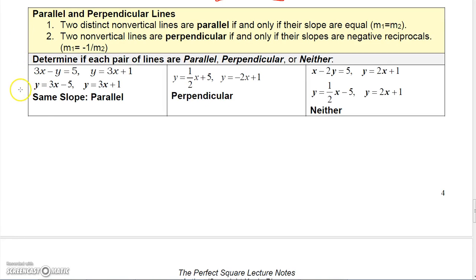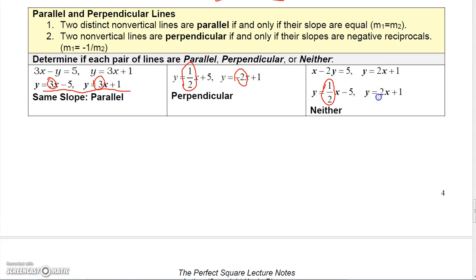For parallel and perpendicular lines: if two lines have the same slope (but different y-intercepts), they are parallel. If two lines have slopes that are negative reciprocals of one another, they are perpendicular. For example, a line with slope one-half is perpendicular to a line with slope negative two, since flipping one-half and changing its sign gives negative two. If a line has slope one-half and another has slope positive two, they're neither parallel nor perpendicular.